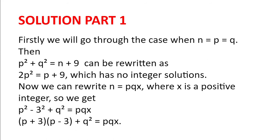So we can now write n to be pqx, where x is a positive integer. And so we get p squared minus 3 squared plus q squared equals pqx. Or p plus 3 multiplied by p minus 3 plus q squared equals pqx.